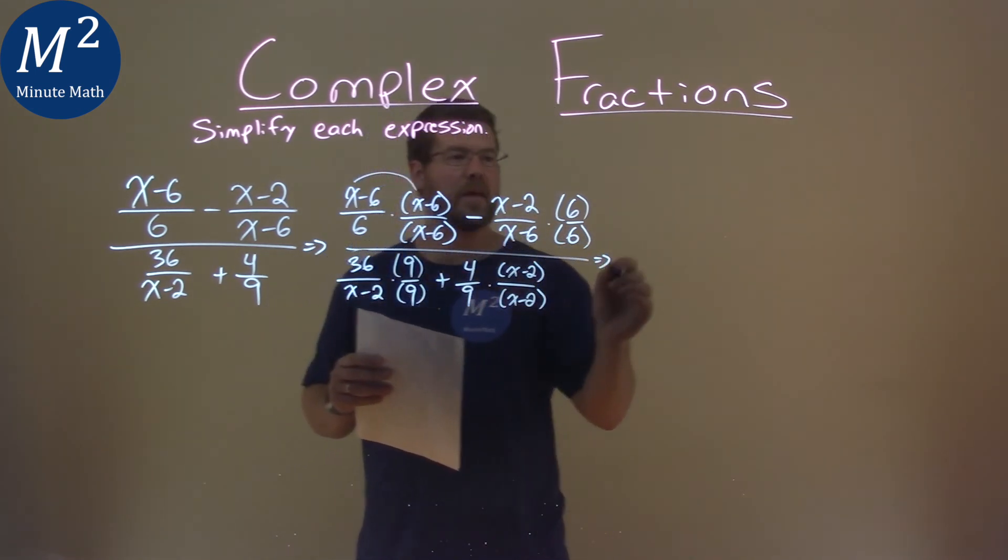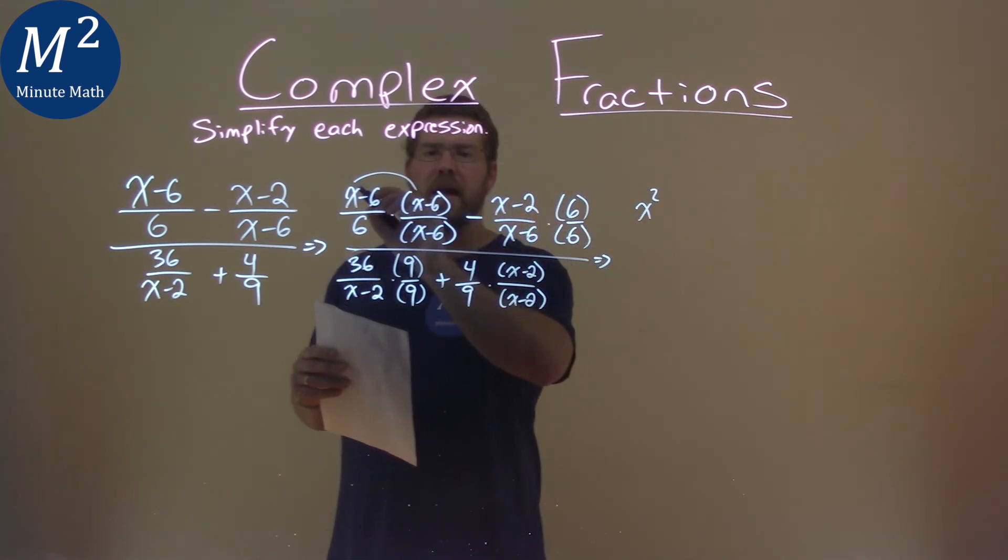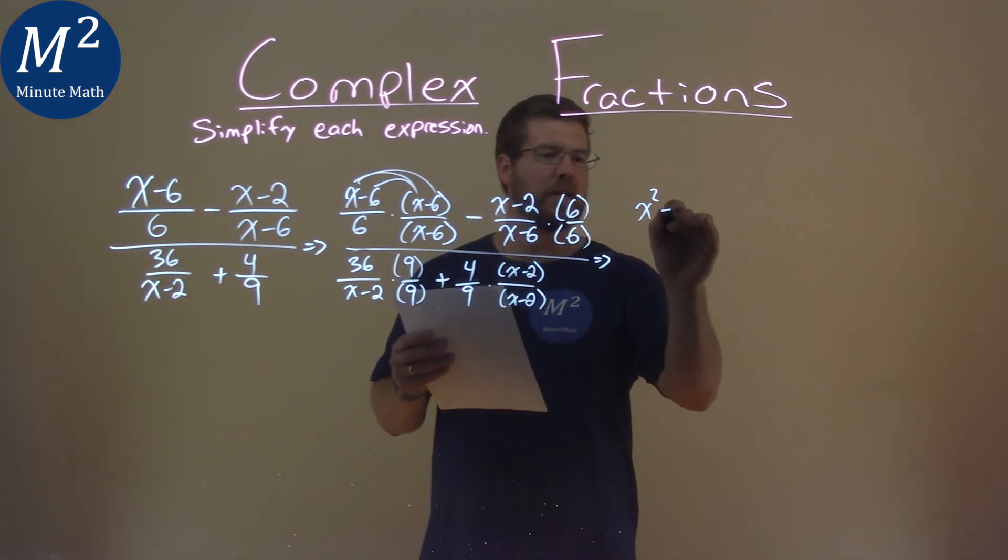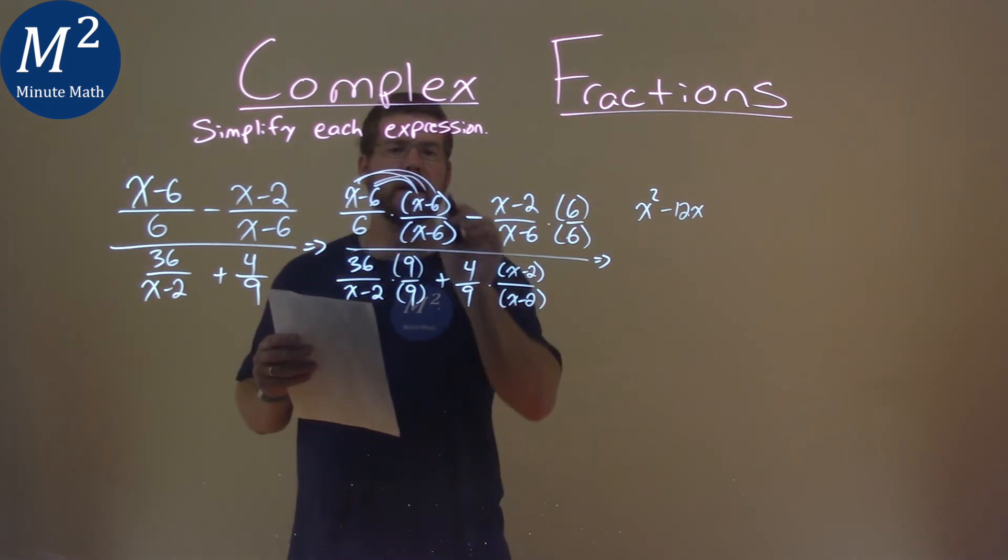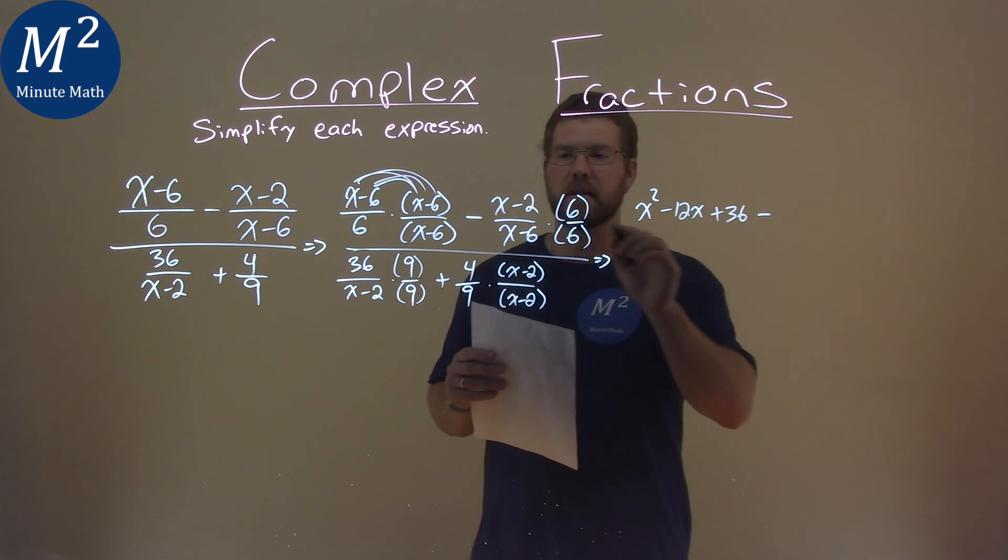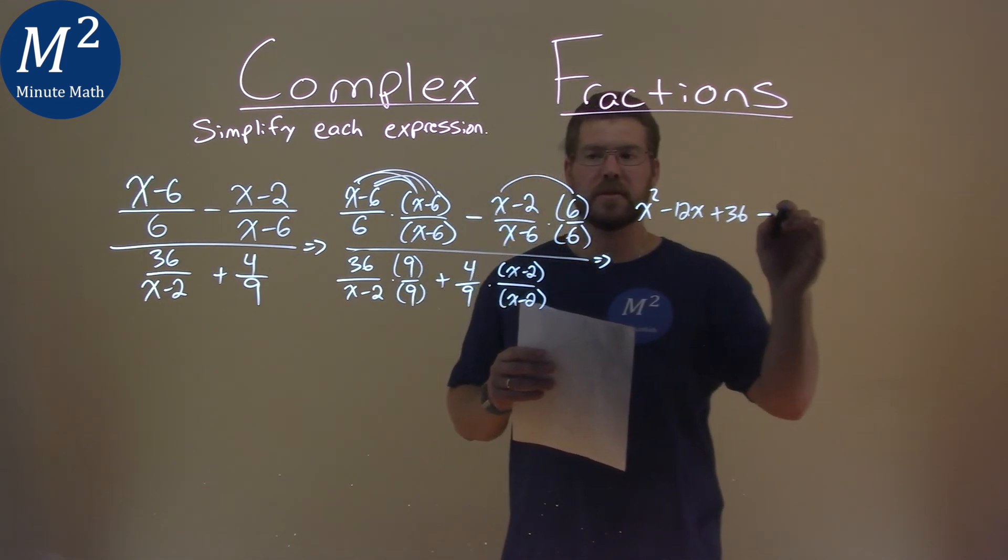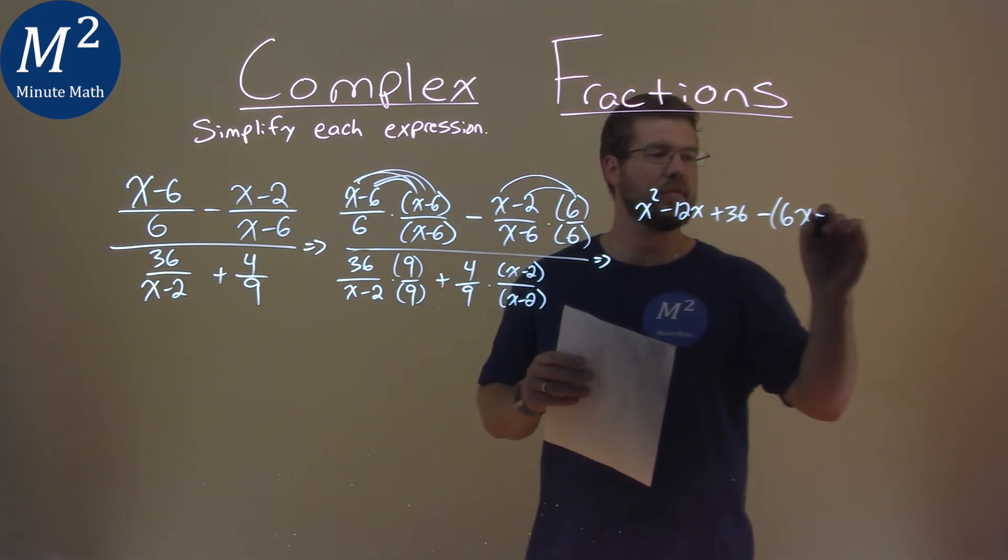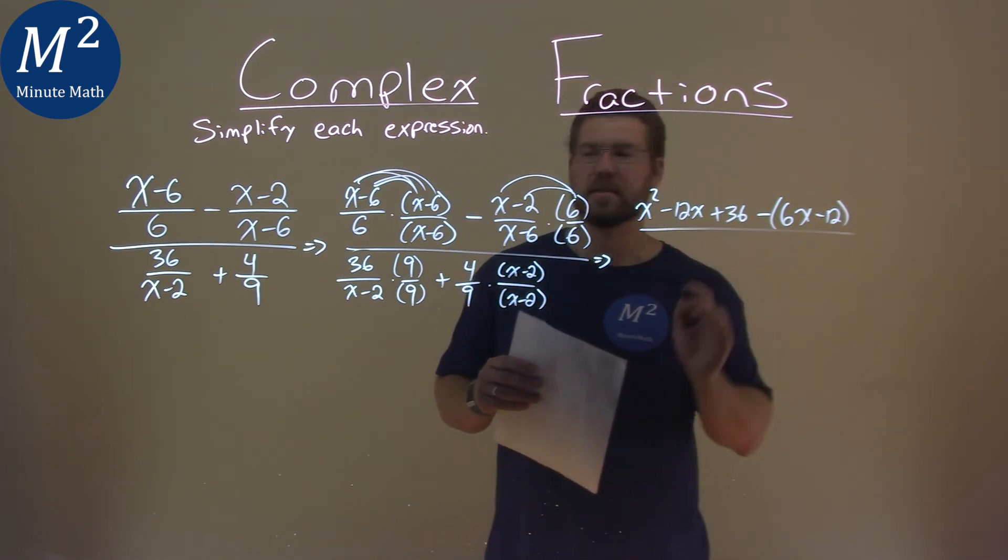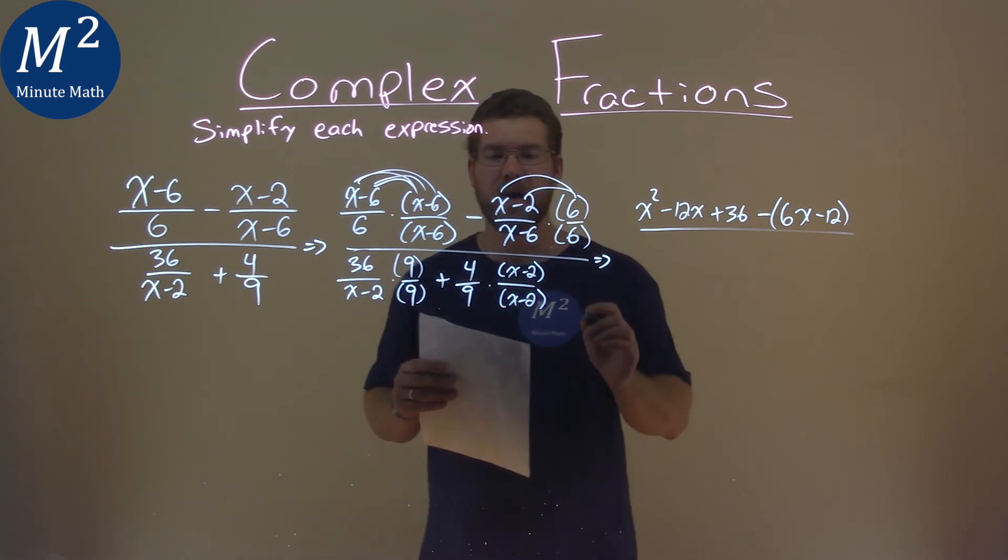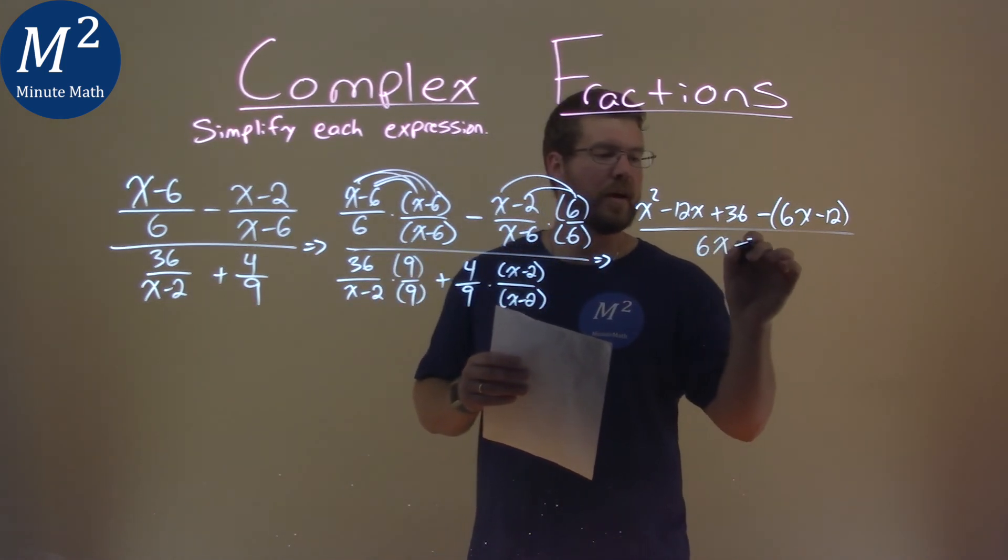All right. x times x is an x squared, and then x times a minus 6x, and then a minus 6 times x, together is a negative 12x. Hopefully, you know how to do that. And negative 6 times a negative 6 has a positive 36. We're subtracting now 6 times the x, which is a 6x, and then 6 times a minus 2 is a minus 12. Okay? And we'll deal with that minus sign later. Our denominator here is still, which way did I do it? Okay, I wrote it like this. Let's multiply that out while we're at it. 6 times x minus 6 is 6x minus 36.